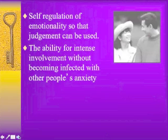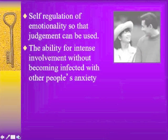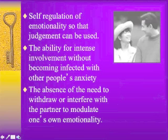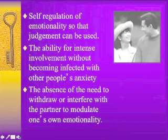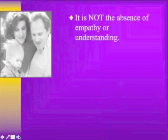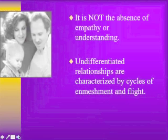It is the ability for intense involvement without becoming infected with other people's anxiety — not cutting off or not caring or not being connected, but being intensely connected without being infected with whatever the other person's emotion is. It is the absence of the need to withdraw or to interfere with a partner to modulate one's own emotionality. Like when people say 'I need to go off and find myself' — we usually get to know ourselves better when we're in relationship with others, so I can stay connected to someone else while I'm working on my own issues. It is not the absence of empathy or understanding. Undifferentiated relationships are characterized by cycles of enmeshment and flight — absolutely loving this person, then hating this person, needing to be around them all the time or never wanting to see them. Differentiated is a much more balanced space.